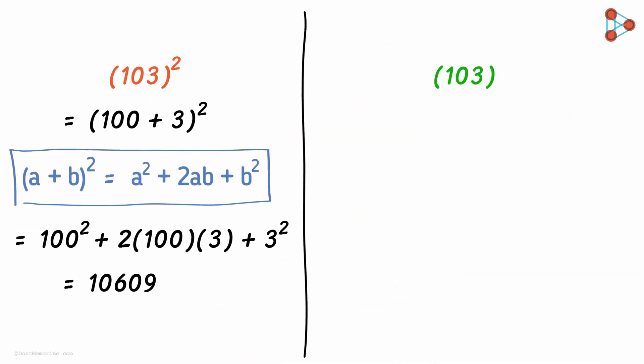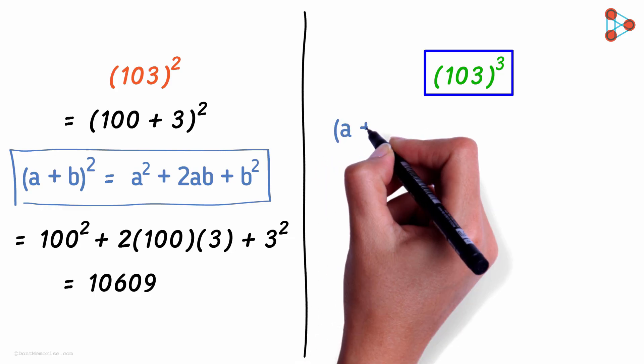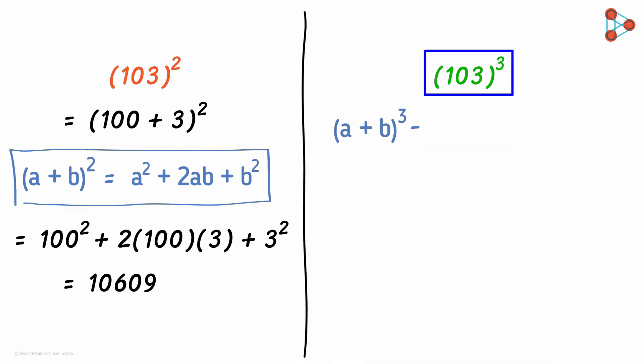Now consider the same number but this time let's change the power to three. This is one hundred and three cubed. How do we proceed now? Yes, you're right. We do it by using the formula of a plus b the whole cubed. This is the formula.